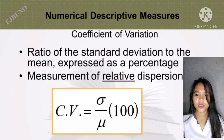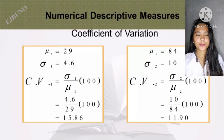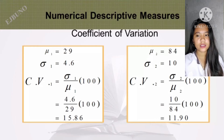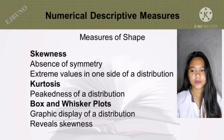Coefficient of variation is the ratio of the standard deviation to the mean expressed as a percentage — a measurement of relative dispersion. The formula is: CV equals standard deviation over population mean times 100. Example: population mean equals 29, standard deviation equals 4.6. CV equals 4.6 over 29 times 100, which equals 15.86. Another example: population mean equals 84, standard deviation equals 10. CV equals 10 over 84 times 100, which equals 11.90.